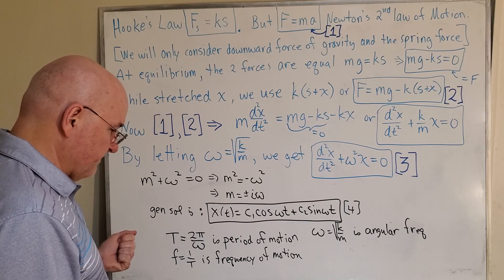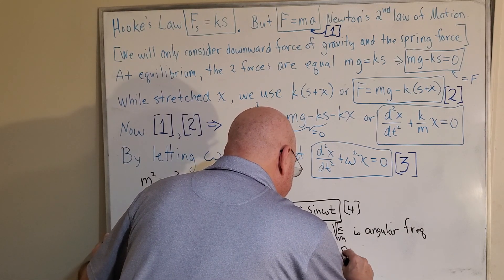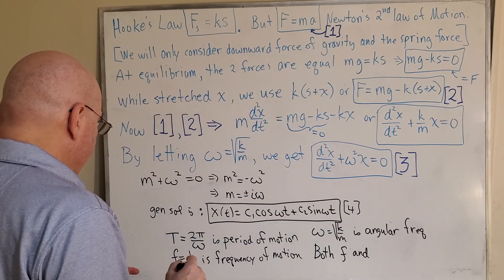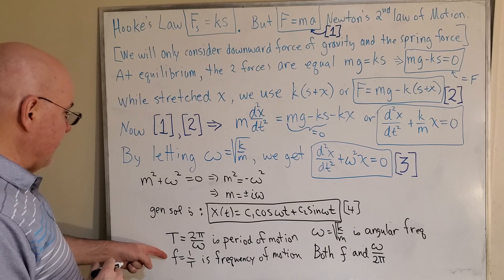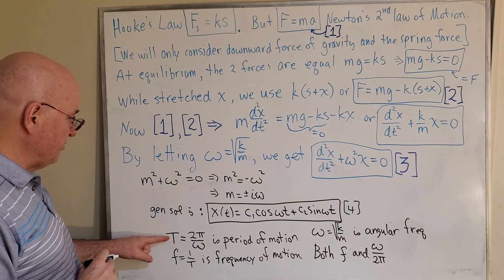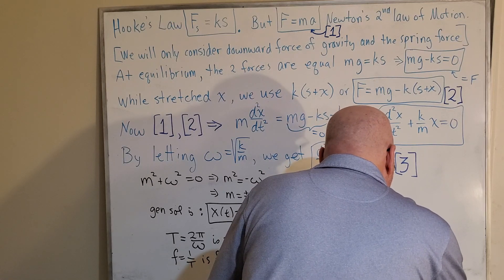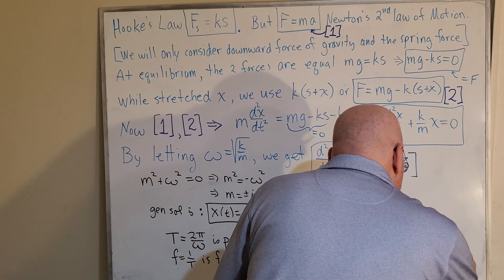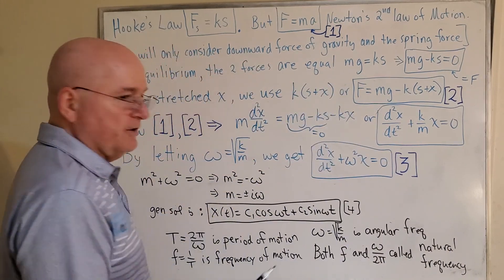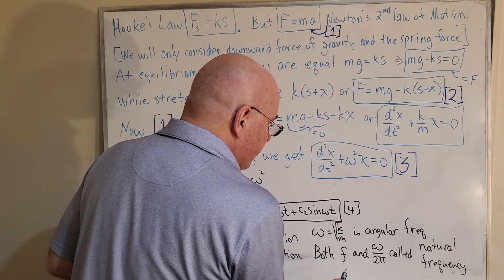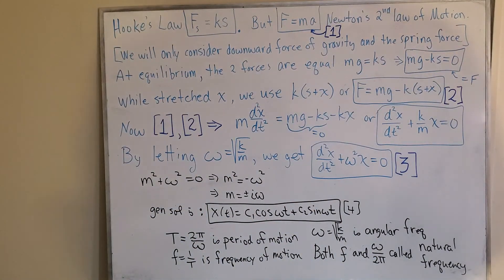Again, you could also call that the circular frequency and it's of oscillation. And then the last one is, let's see, just a note, both f and ω over 2π. And notice that f is the reciprocal of T, the period of motion, which would be ω over 2π. So it's two ways of saying the same thing, or the natural frequency, called natural frequency. So at the end here, we just got a couple of definition terms. I hope you can see that. f and ω over 2π, which are equal, is called the natural frequency.